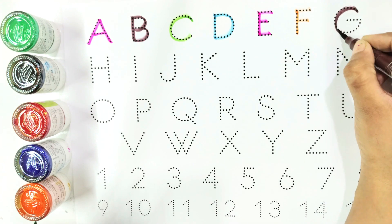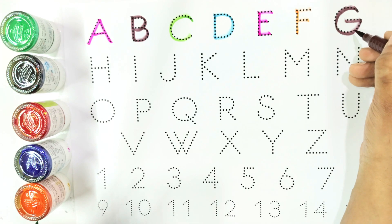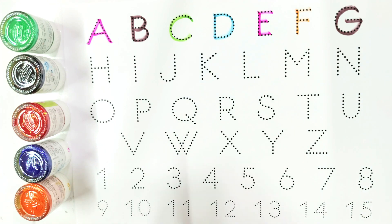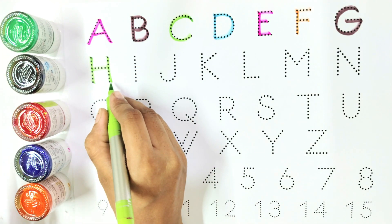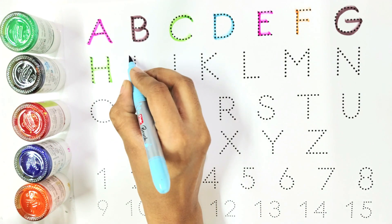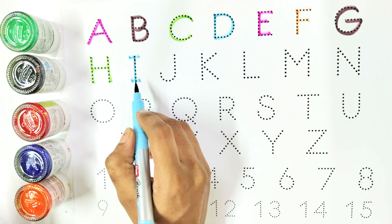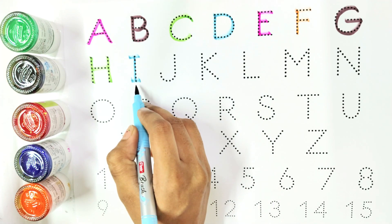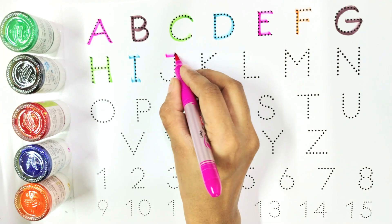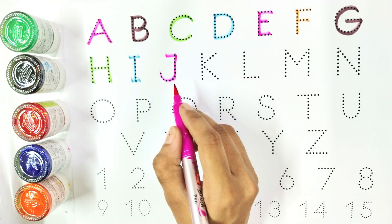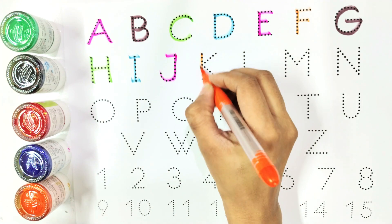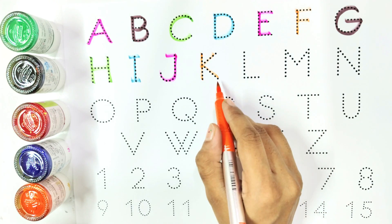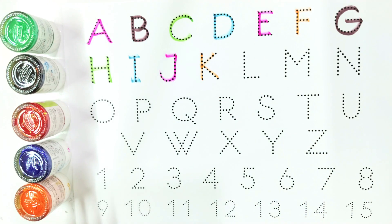Write with me E. E is for eggplant. Write with me F. F is for flower. Write with me G. G is for goat. Write with me H. H is for house. Write with me I. I is for ink.